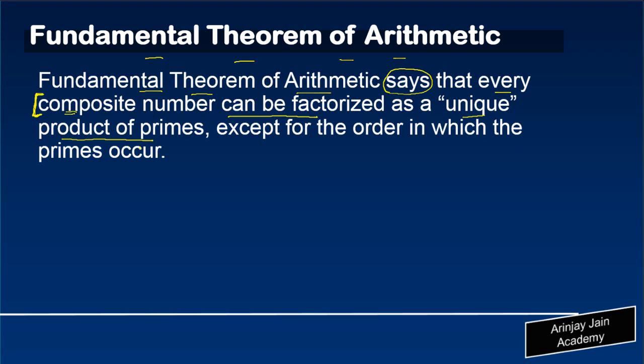What does this mean? This means that whenever we want to express a composite number in terms of its factors, those factors which are available is a unique combination for every composite number. It cannot be the same for two composite numbers, except for the order in which primes occur.